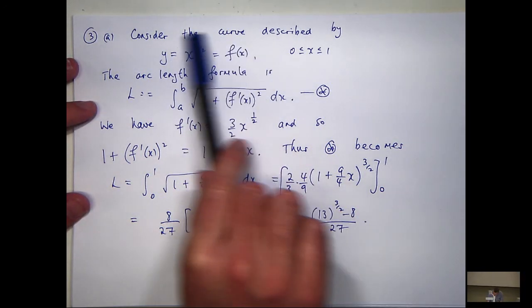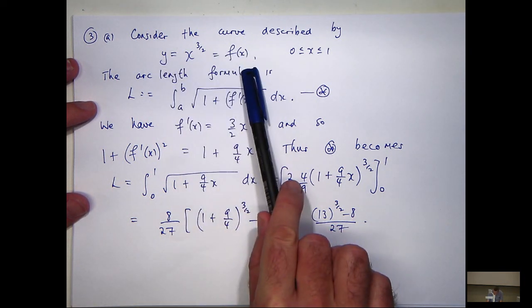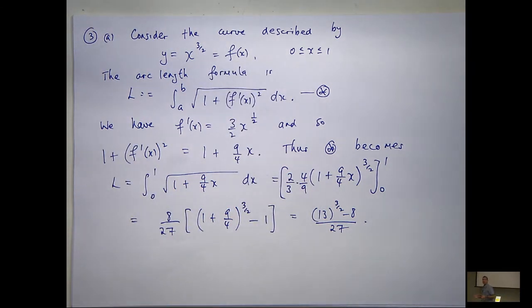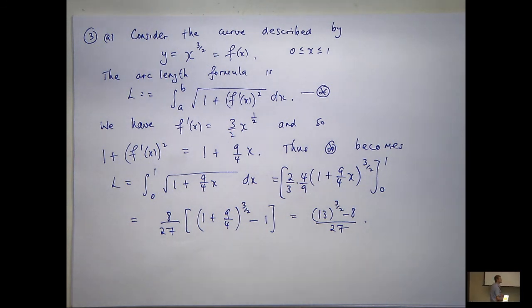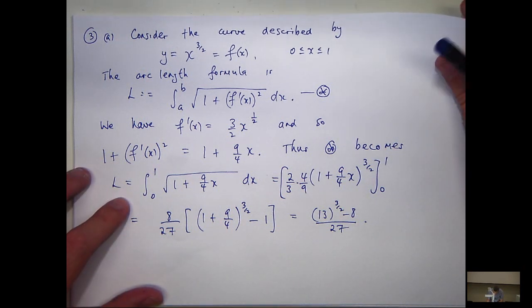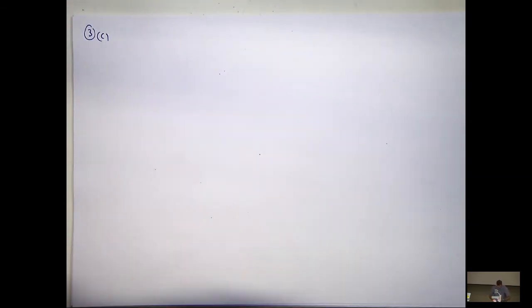That was the case where the function — the graph — is described using y = f(x). But there are other ways of describing curves: you can use a parametric representation, or polar coordinates. So let's have a look at another fairly straightforward example, where we're going to use so-called parametric descriptions. This is question 3 part C.